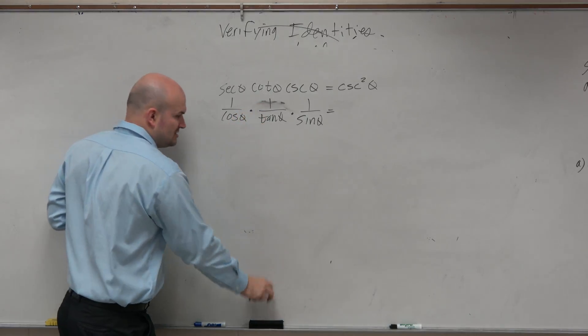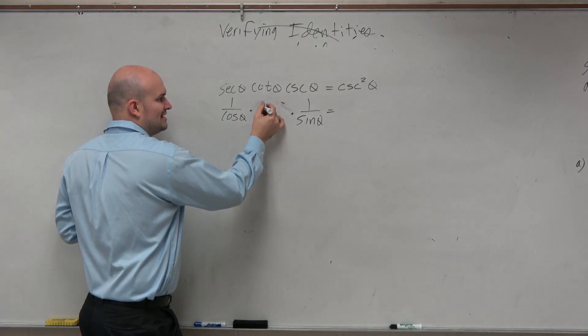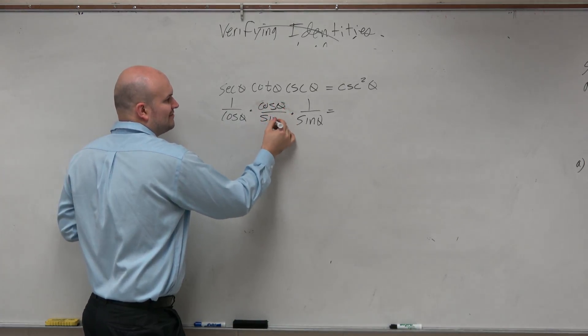Another thing to do is just to write everything in terms of sines and cosines. So instead of writing cotangent of theta as 1 over tangent, look what happens when I write this as the quotient identity. Cosine of theta over sine of theta.